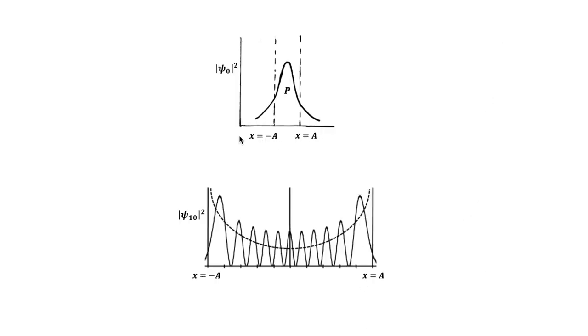For example, for n = 0, the probability density is shown here. Classically, the probability of finding the particle at a given position is larger at the end points where the particle is slower, and it is least near equilibrium at x = 0 where the particle moves more rapidly.